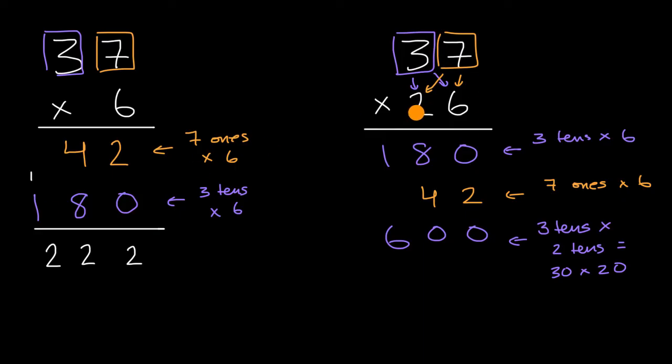Now we think about seven twenties. Seven times two is 14, so seven times 20 is 140. To be clear, this is seven ones times two tens, or seven twenties.